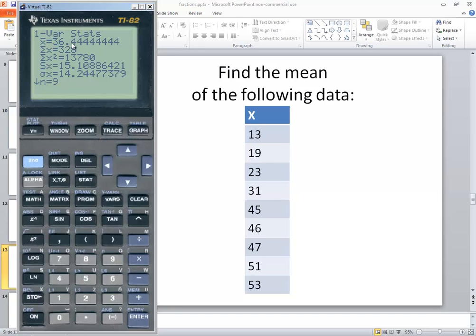Anyway, the X bar, that's our sample mean. That's also your population mean. Same formula. So rounded to two decimal places, we'd have 36.44. And that's the mean.